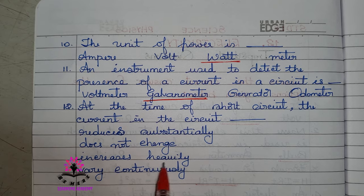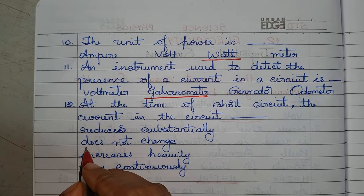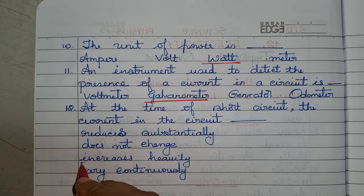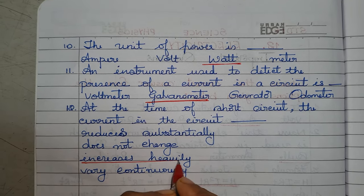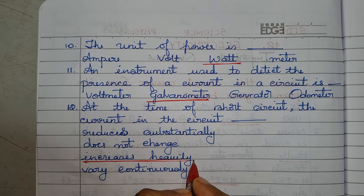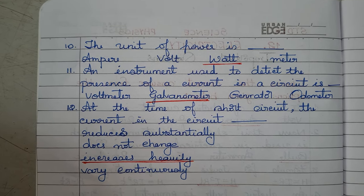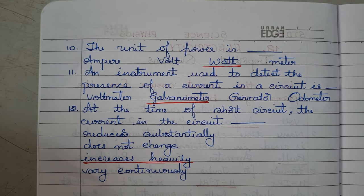Question number twelve: at the time of short circuit, the current in the circuit dash — reduces substantially, does not change, increases heavily, or increases continuously. The right option is increases heavily. Whenever there is a short circuit, the current increases heavily.